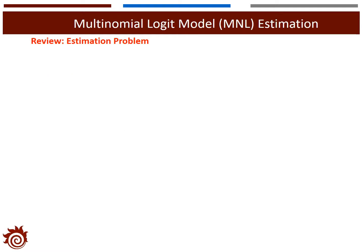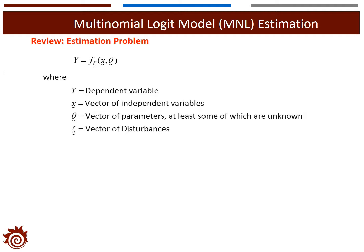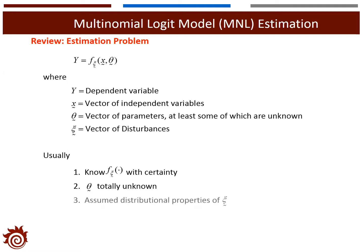Before MNL estimation, we will have a quick review about the estimation problem. This is the general formula for the equation we can apply for parameter estimation, which can be rewritten in a random format. Here, y is the dependent variable we can observe, x is the vector of independent variables observed from the sample, theta is the vector of parameters we want to estimate, and ksi is the vector of disturbance — the random term in the model. Usually, we know the formula for ksi with certainty, containing some random variables. The parameters are totally unknown and we want to estimate their values, and we will have an assumption about the distribution of the random terms ksi.